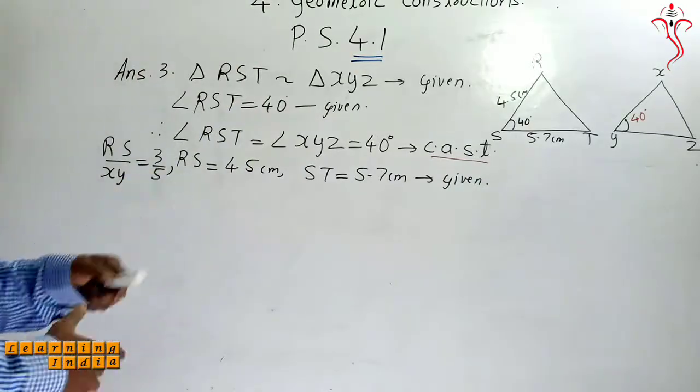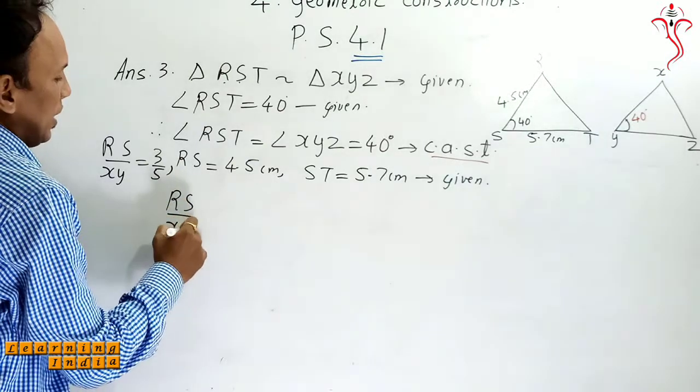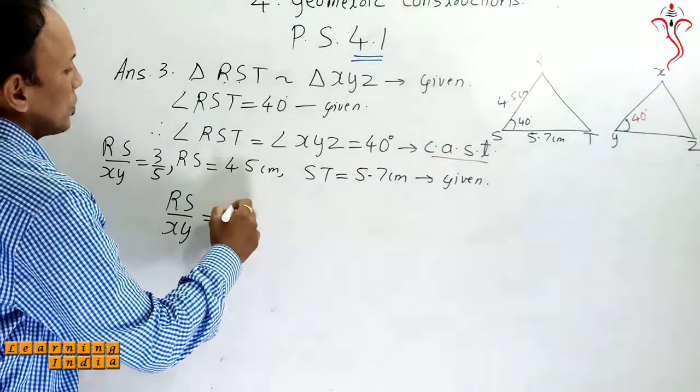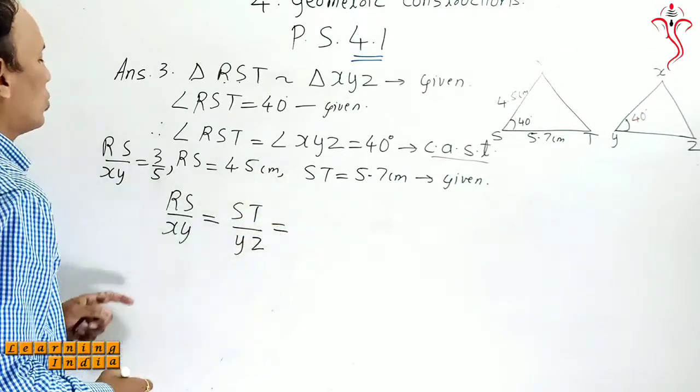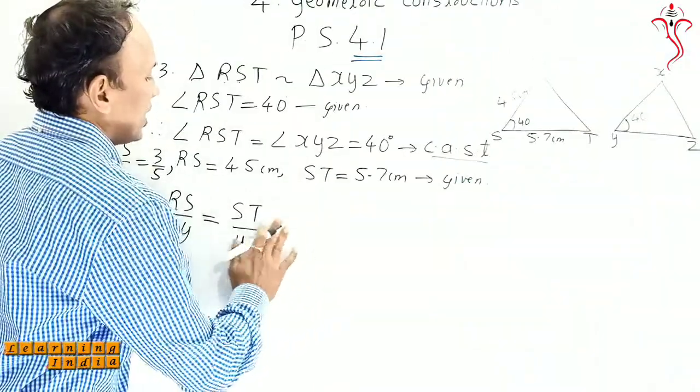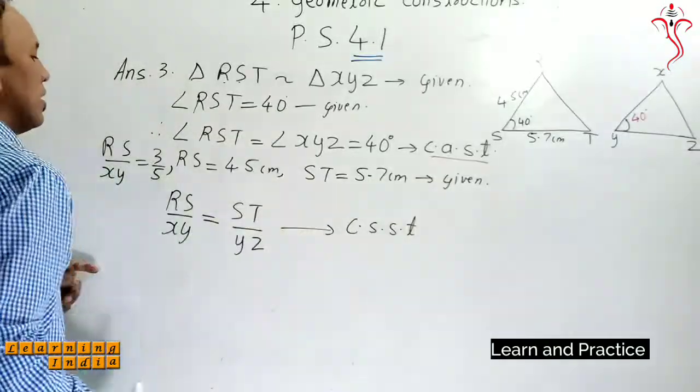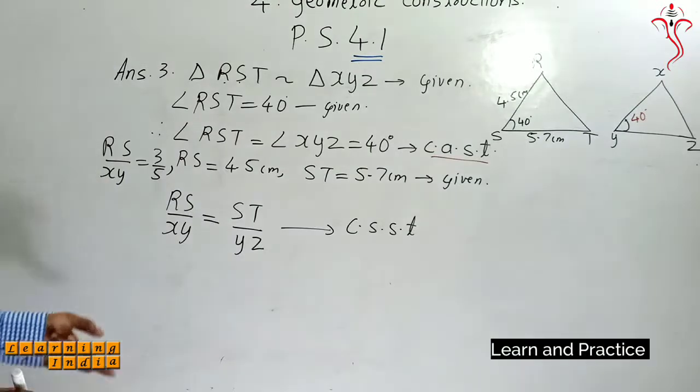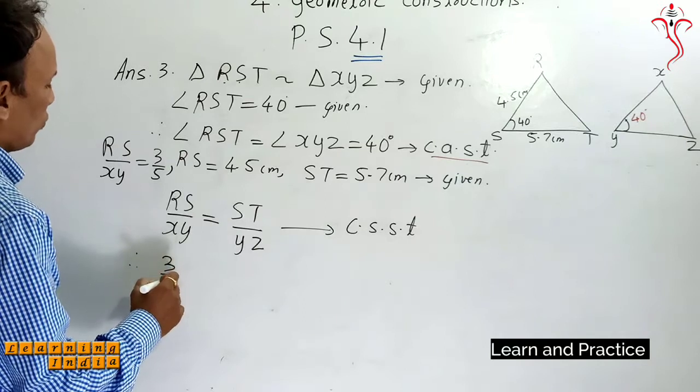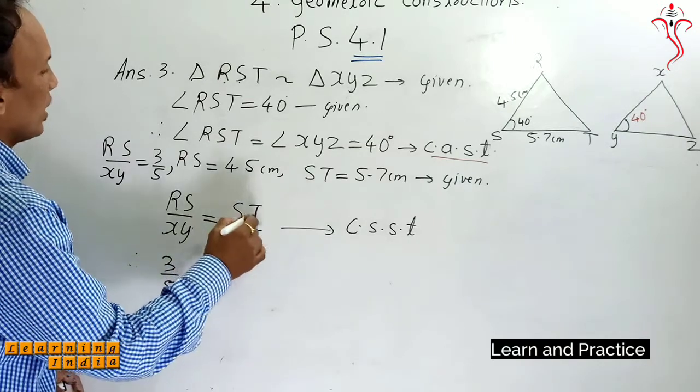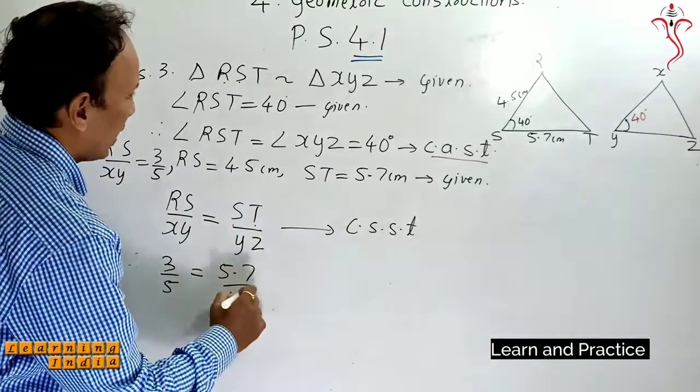RS upon XY is equal to ST upon YZ is equal to CSST - corresponding sides of similar triangle. Therefore 3 upon 5 is equal to 5.7 upon YZ.